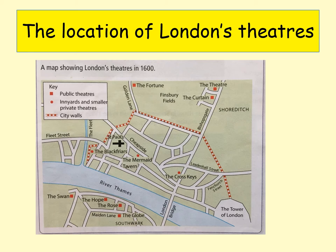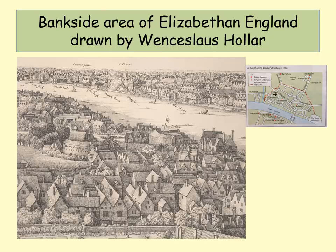Some theatres, like the Curtain, were built over near Shoreditch. This is where the Tower of London was, and that's St Paul's. We can see the centre of London in the year 1600, in the time of Elizabeth the First. You can see the Bankside area and the Globe Theatre, as well as a bear baiting ring. If you can read the text, you can see it in old Elizabethan writing.